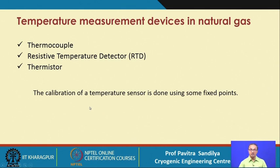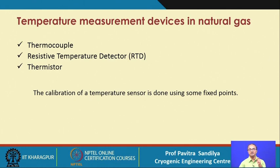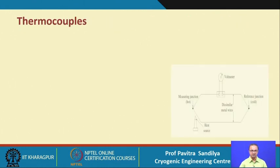All these sensors need to be calibrated with some fixed points. Some common fixed points are the steam point and the ice point — that is, the temperature at which water boils at one atmosphere, and the temperature at which water freezes to ice at one atmosphere.